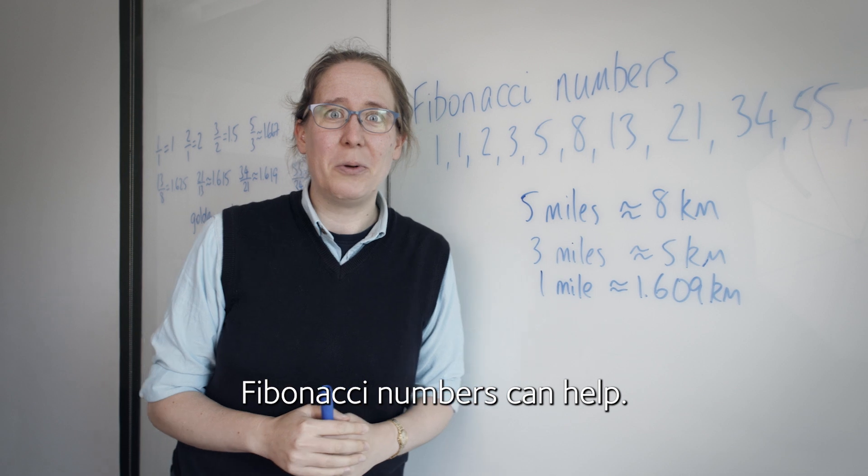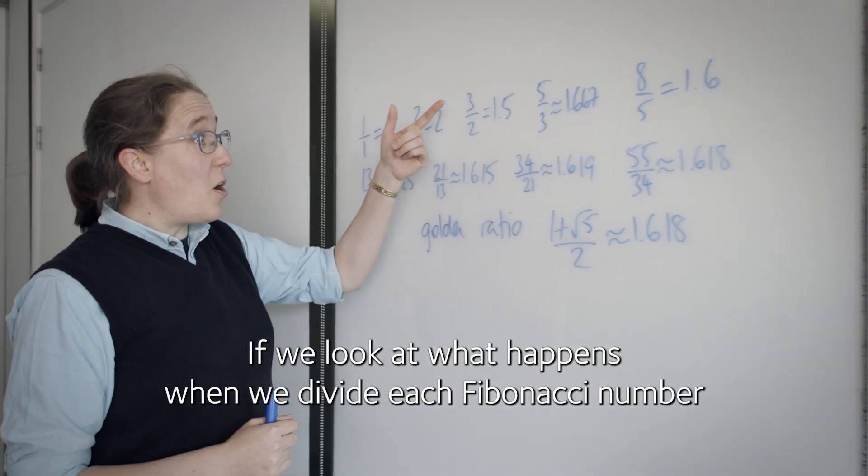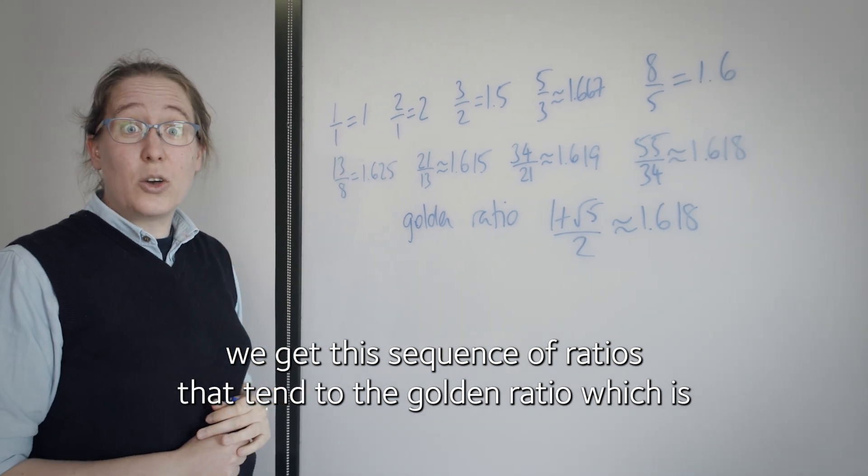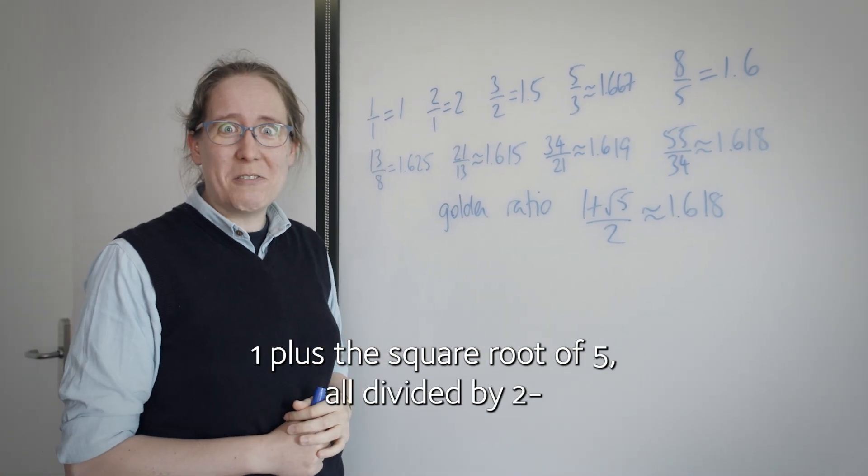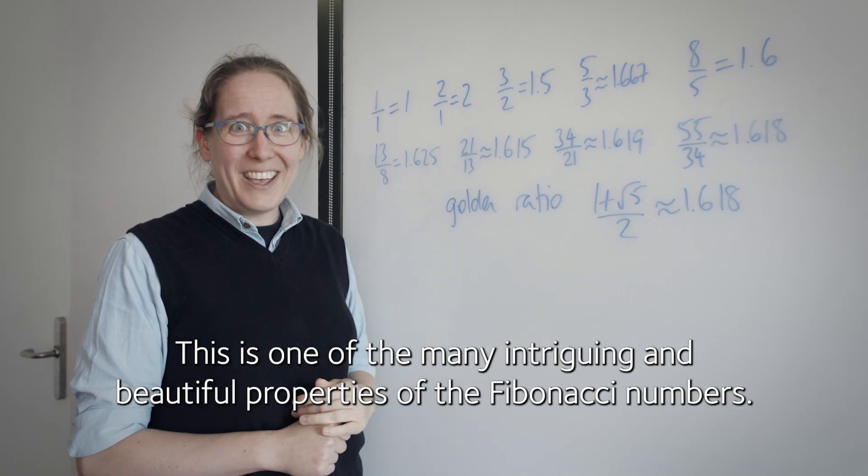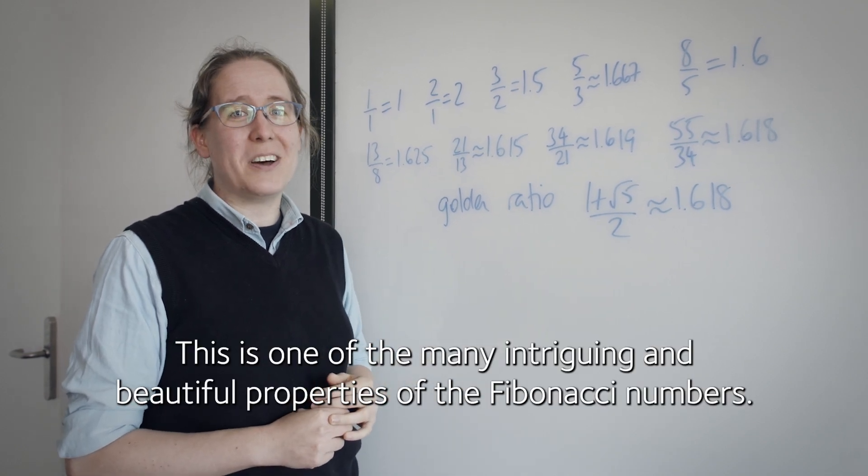Fibonacci numbers can help. If we look at what happens when we divide each Fibonacci number by the previous one, we get this sequence of ratios that tend to the golden ratio, which is 1 plus the square root of 5, all divided by 2. It's about 1.618. This is one of the many intriguing and beautiful properties of the Fibonacci numbers.